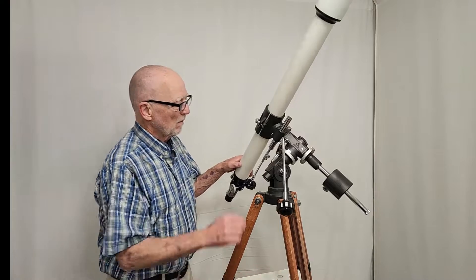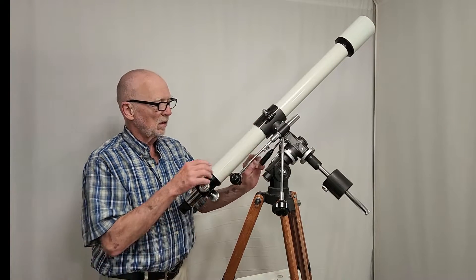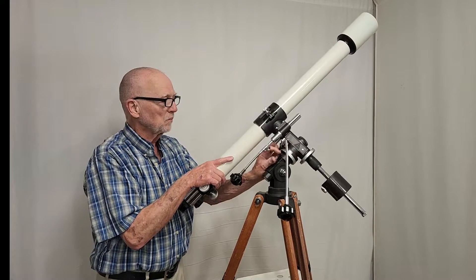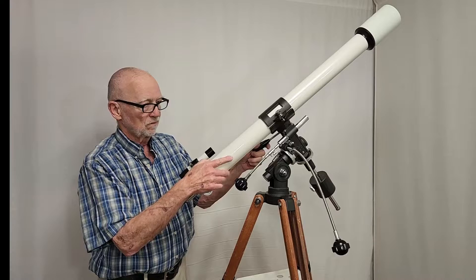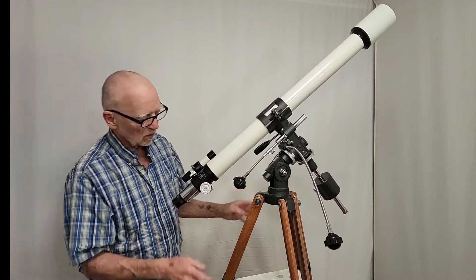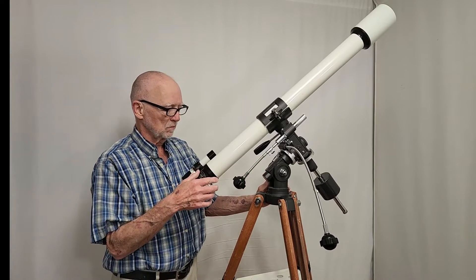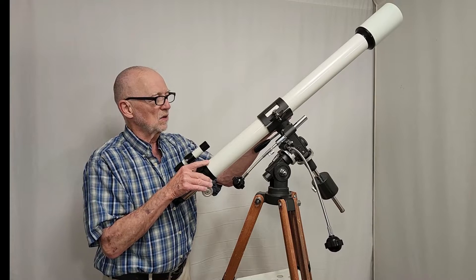Of course, mostly in those days, they were doing a lot of piggyback photography, I think. So this would be fine for fairly short exposures, wide angle camera. You could probably use that to polar align. So I don't understand the reason for the fancy finder on this one.